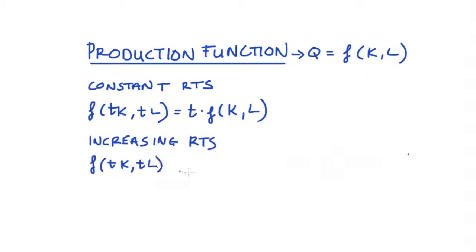Well, increasing returns to scale is when we change all of our inputs by some factor (we can call this factor T again) and our output changes by more than that factor. So greater than T times our original output. So an example of this might be, for instance, internet or telephone connections.